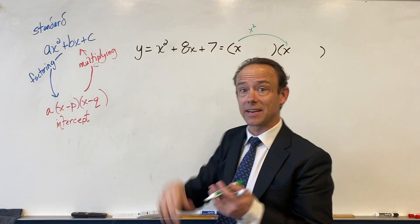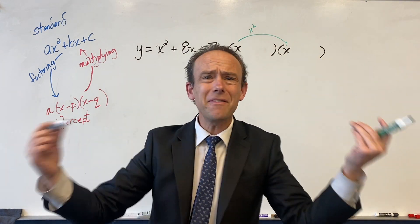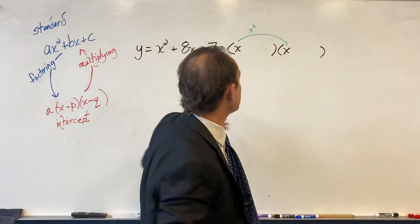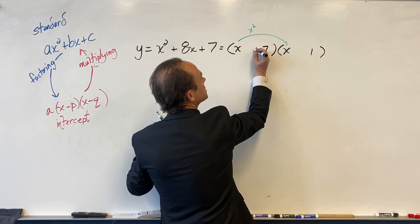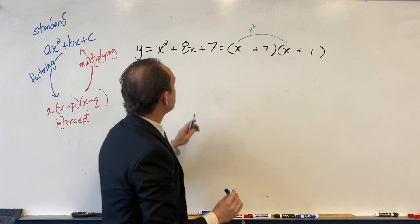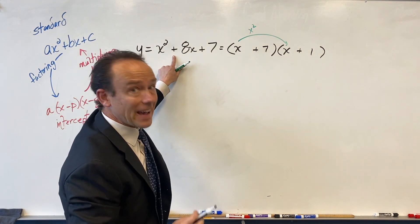Because if I was to distribute, that would give me the x squared. We're good. Now over here I've got to get a seven, and I know that's got to come from these two values. Seven's a prime number, right? It's got to be seven times one. So let's go seven times one. Let's make them both positive because they've got to multiply to a positive and they've got to add to a positive.